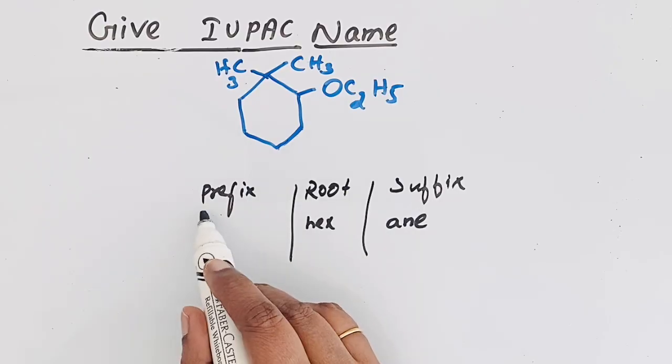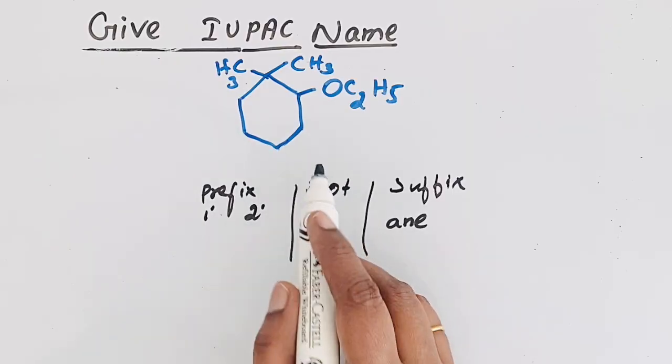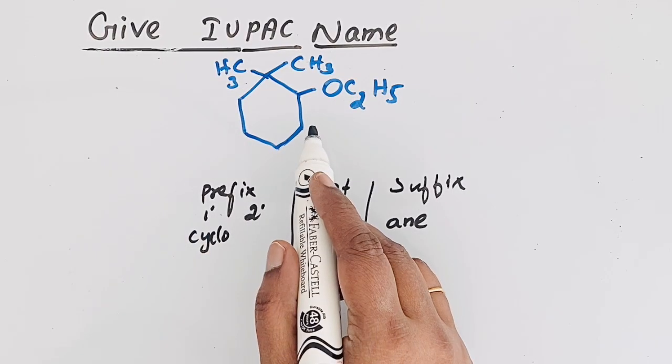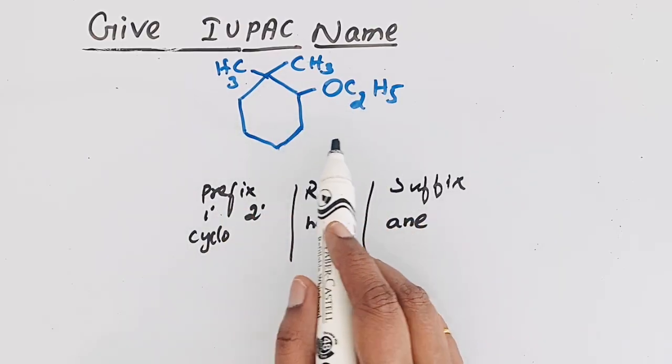If we come to the prefix, we have primary and secondary. In the primary, this is a cyclic compound, so cyclo. The word cyclo is used. Then for the secondary, we have two substituents.